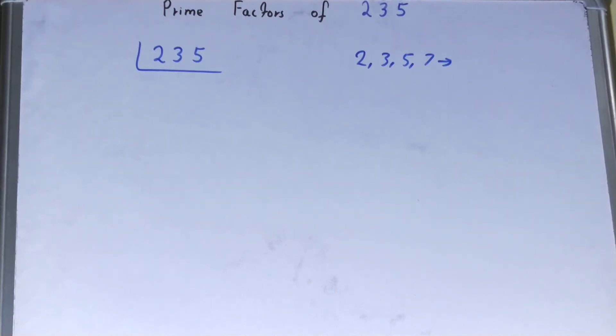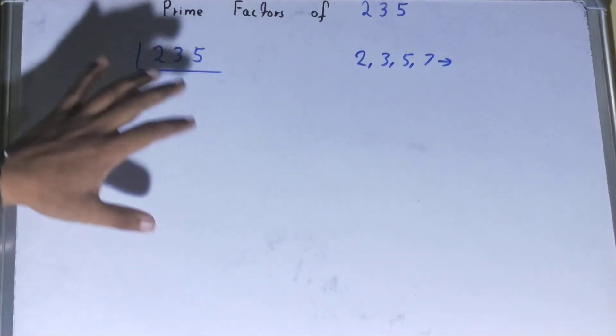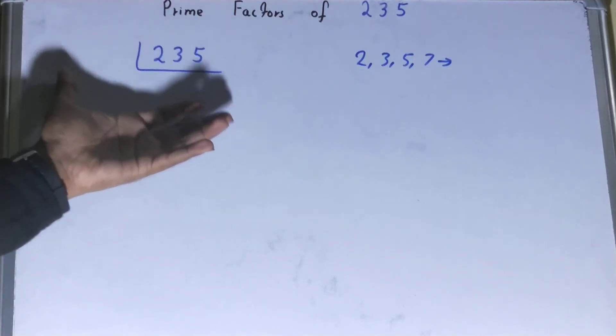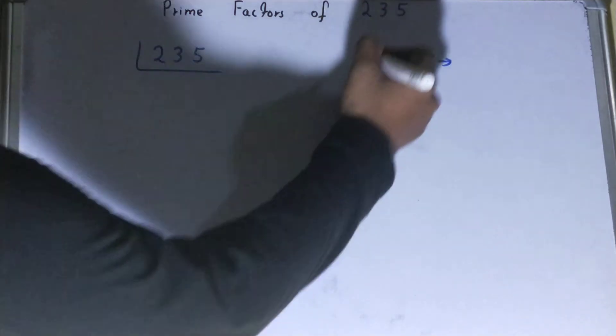So what we are going to do is start with the lowest prime number that we have, that is 2. Is the number 235 divisible by 2? Clearly not, because it is an odd number.